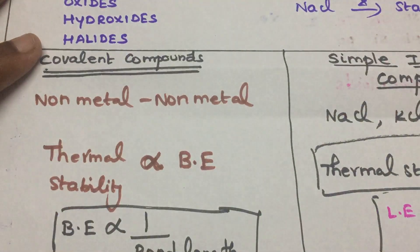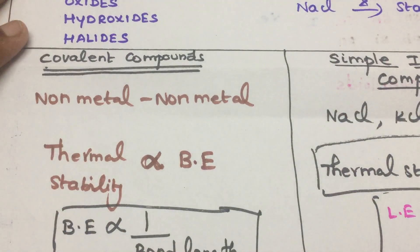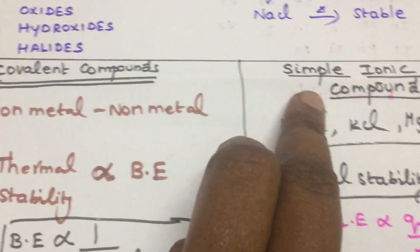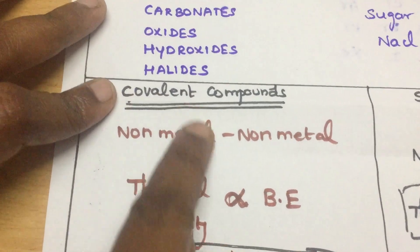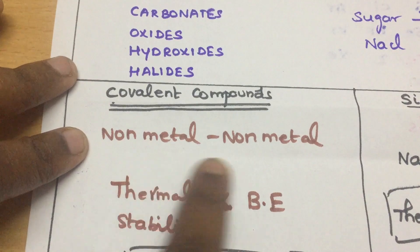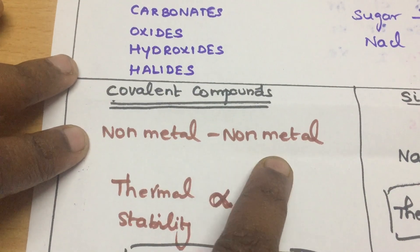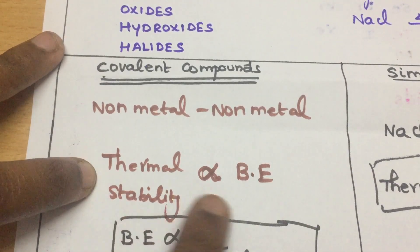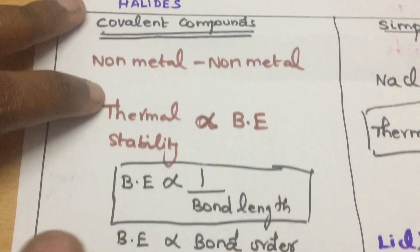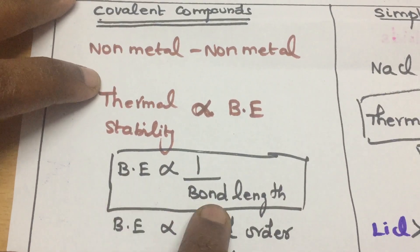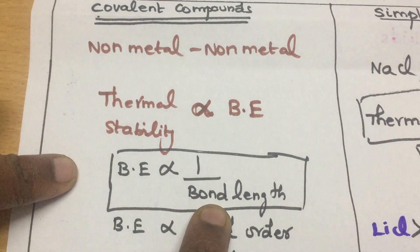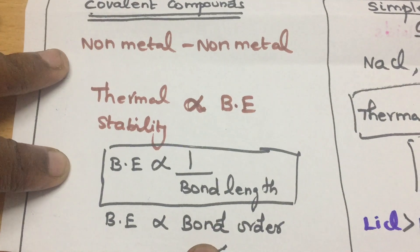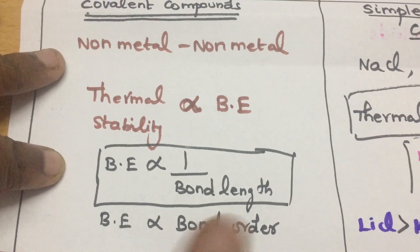The trick to solve thermal stability: we categorized covalent compounds, simple ionic compounds, and polyionic compounds. Covalent compounds are formed between non-metal and non-metal. You have to apply the rule that thermal stability is directly proportional to bond energy. Bond energy is inversely proportional to bond length, and bond energy is directly proportional to bond order.